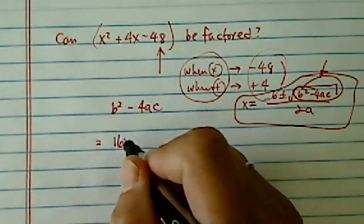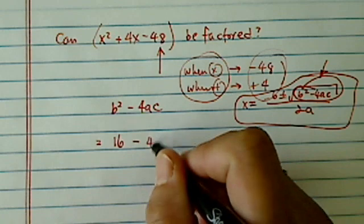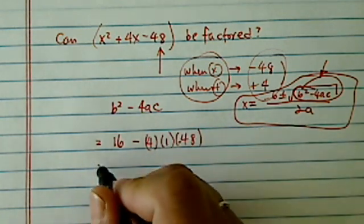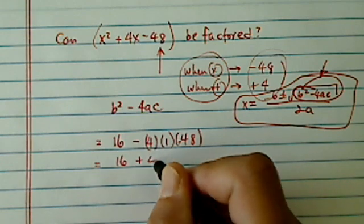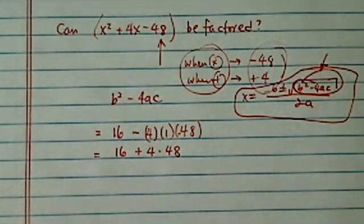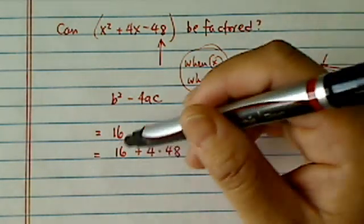b squared, which is 16, it's 4 squared, minus 4 times 1 times 48, minus 48. So you have 16 plus 4 times 48. So from here, I already see that there's no way I can have two numbers because it's not a perfect square over here.